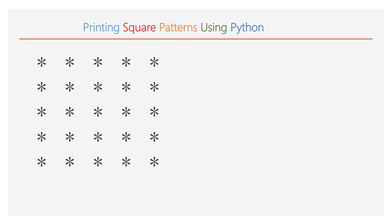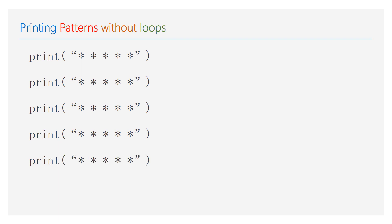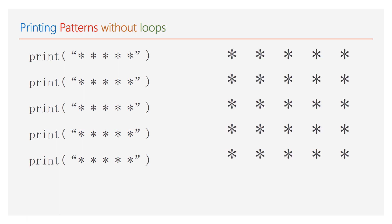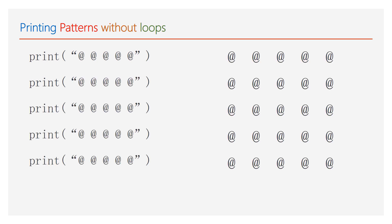Let me start with a simple square pattern of 5x5 without using any iterative loops. As the required pattern is 5x5, use 5 print functions with 5 stars as an argument. As we need output in 5 lines, I am using 5 print functions and the output is a 5x5 square pattern. In place of star, one can print hash or any other symbol you want. This is a simple way, but printing patterns with multiple print functions is not recommended.